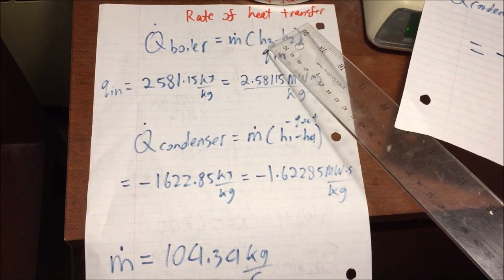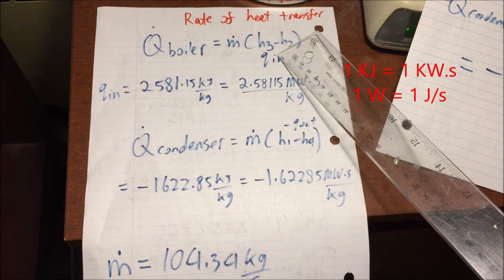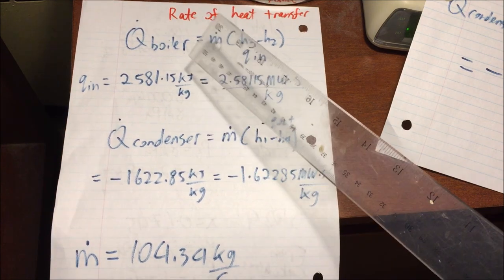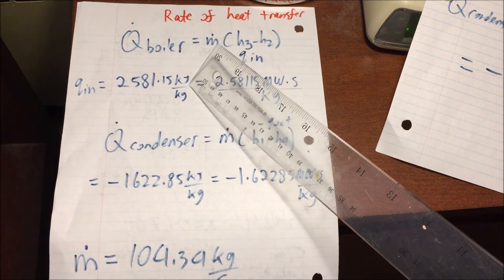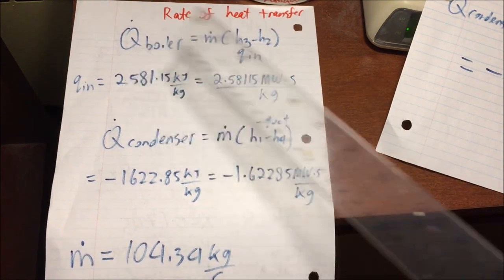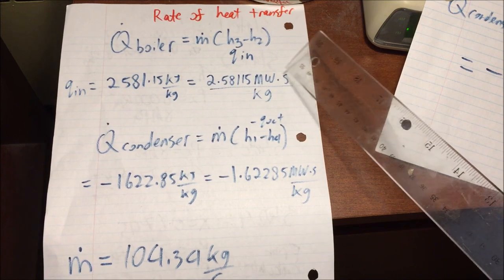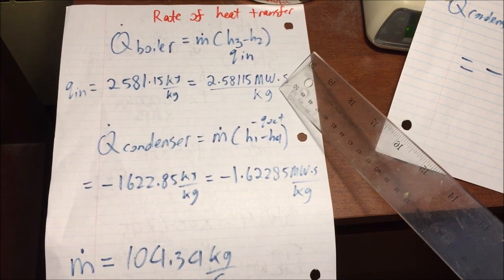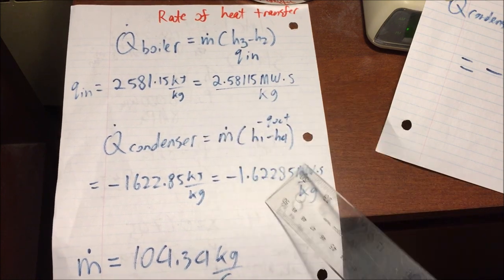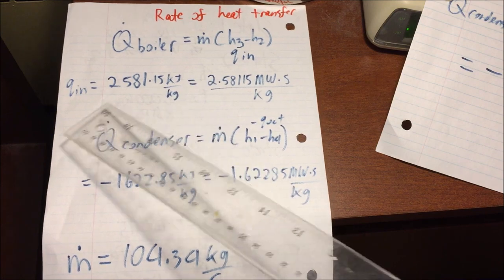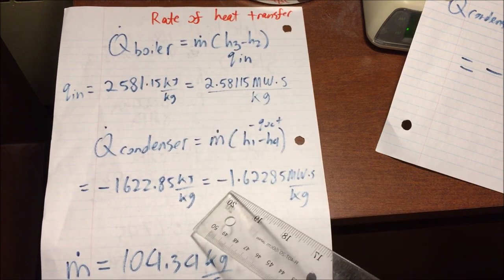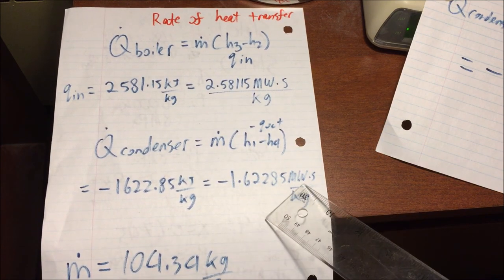The formula to calculate the rate of heat exchange for the boiler is the mass flow rate times the heat in. We have Q in in kilojoules per kilogram, but we must convert it to proper units. Remember that 1 kilowatt equals 1 kilojoule per second. Converting kilojoules into megawatts by dividing by 1000, we get 2.58115 megawatt-seconds per kilogram. We do the same for the condenser using mass flow rate times Q out, giving a heat out of negative 1.6228 megawatt-seconds per kilogram.